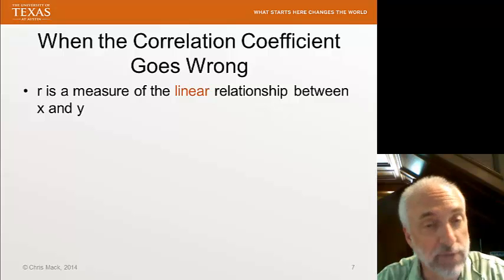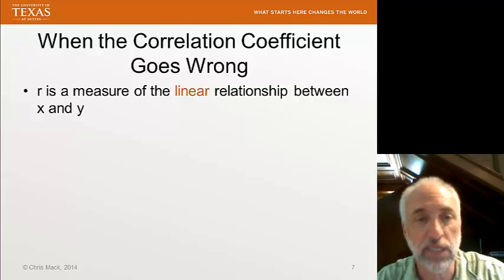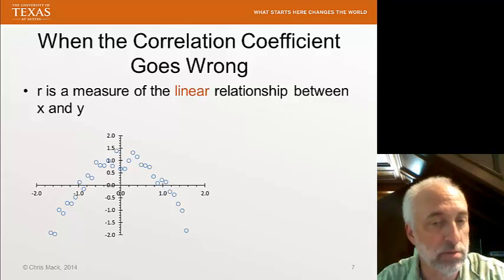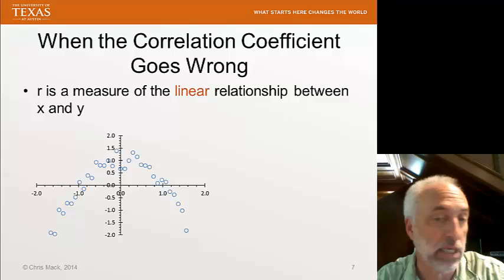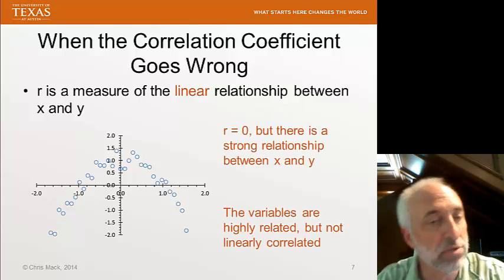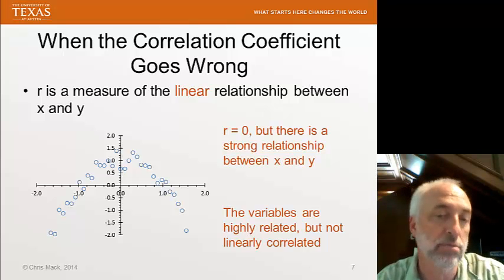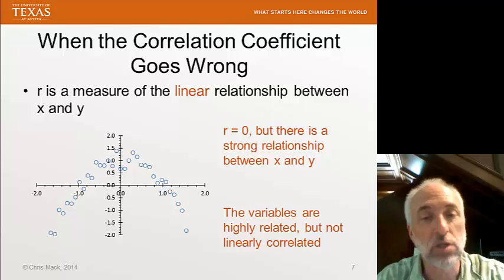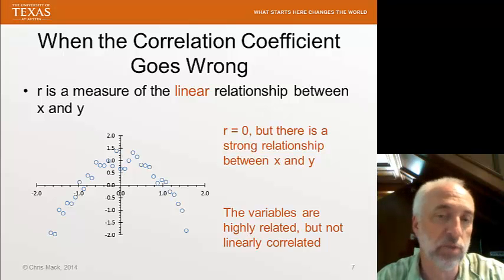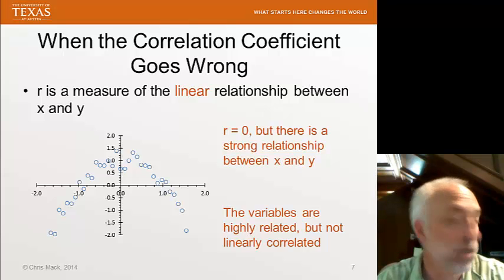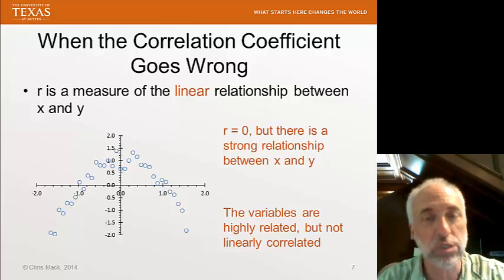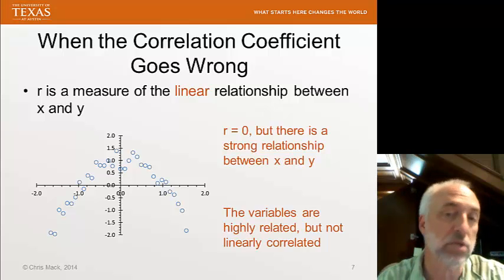But R, we have to always remember, is a measure of the linear relationship between X and Y. Here's a graph that obviously shows a strong relationship between X and Y. It's a parabolic looking behavior. But if I plug this into the calculation, I will find R equal to 0. In other words, while the variables are highly related, there is no linear correlation between them. So just because R is 0, you can't say that that means there's no relationship between the two variables, X and Y. Anyway, this is why a graph is always essential. If you're going to calculate a correlation coefficient, never do it without also graphing the data so you can see what it looks like.